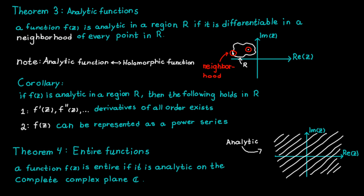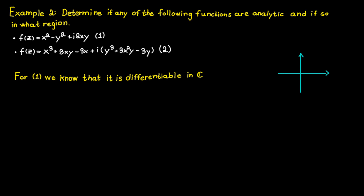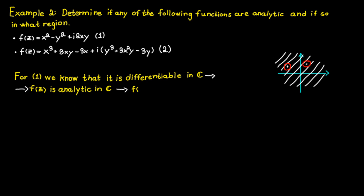In this example, I would like us to determine if any of the following functions are analytic and, if so, in what region. We know the first function is differentiable on the whole complex plane since we determined that in the last example. So we can make a neighborhood for any point in the complex plane, and all neighborhoods will contain only differentiable points. This makes the function analytic on the whole complex plane, and therefore it is entire.